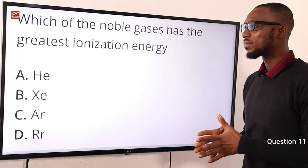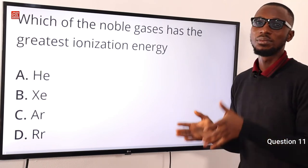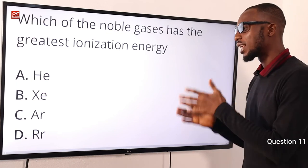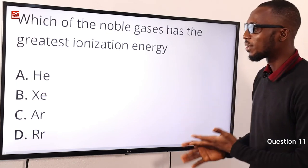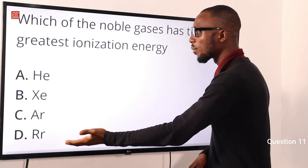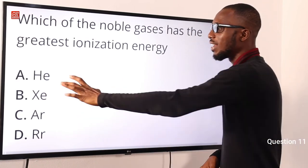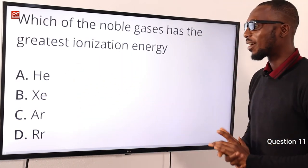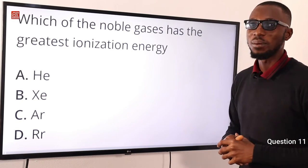Going from helium, you move to neon, then argon, then krypton, then xenon, then radon. Radon has the lowest ionization energy and helium has the greatest. The correct option is option A for helium.